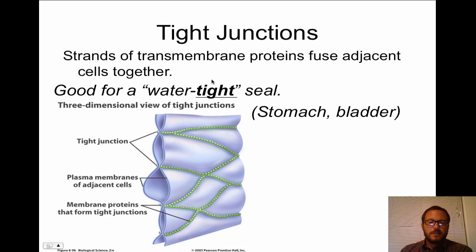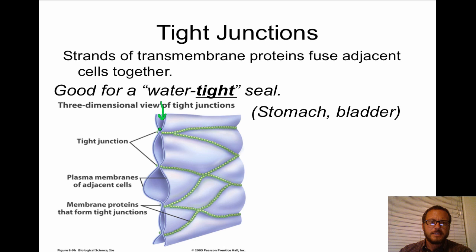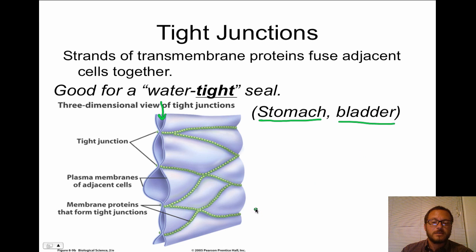Here's the appearance of a tight junction. Any fluid that tries to get in between individual cells will hit these tight junctions and be repelled — nothing can squeeze in between. We find this is really useful in the stomach as well as the bladder, anytime you need to make a water-tight seal around a body cavity.